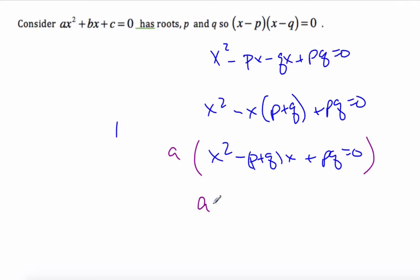And so what I know is ax² - a(p + q)x + apq equals zero. So now what I can say is I can say that b is equal to minus a(p + q), which is here.